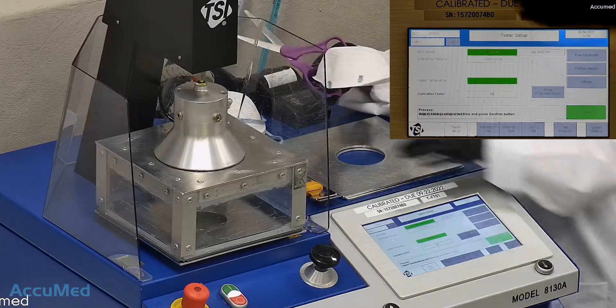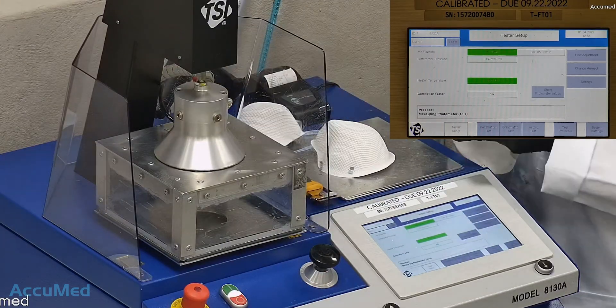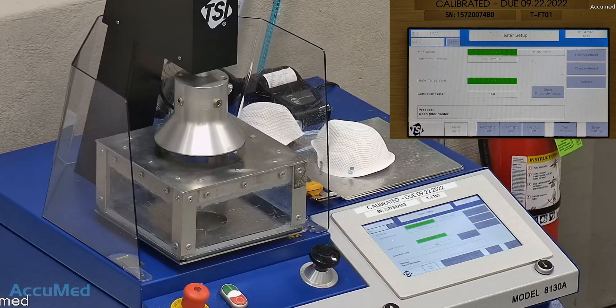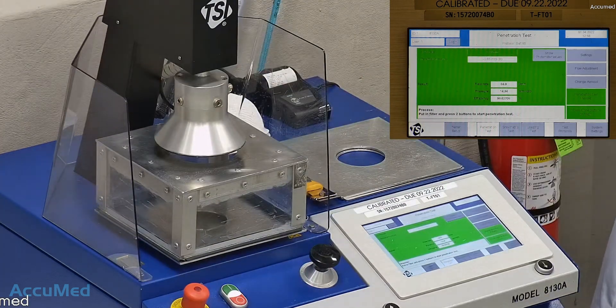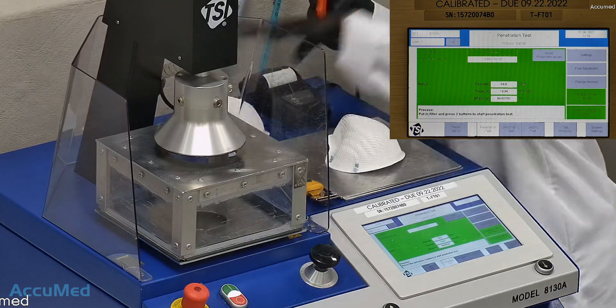As mentioned, this is our TSI machine model 8130A. This is the same filtration testing machine that NIOSH uses to approve N95 respirators.